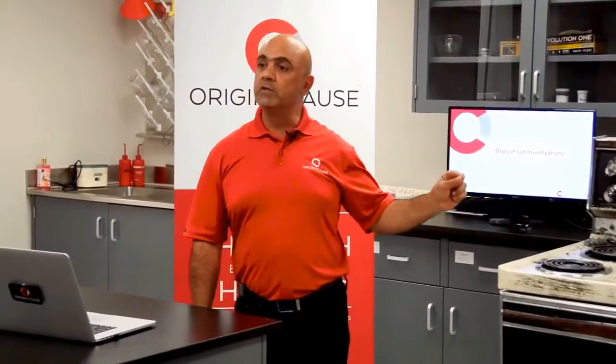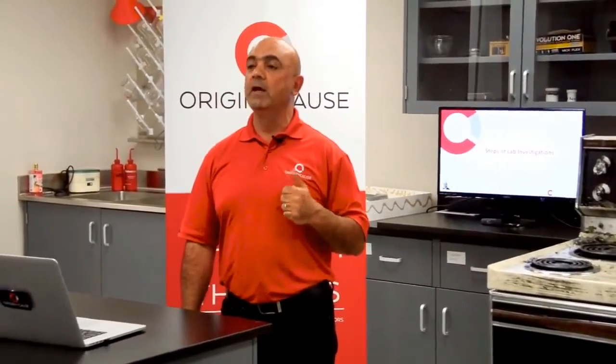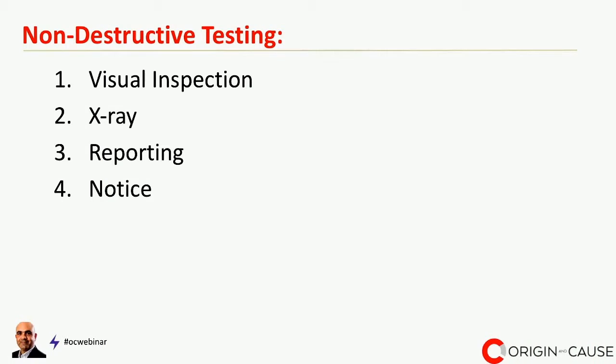Now that we've demonstrated the scene examination and determined it's important to bring this appliance into the lab, there are two ways we conduct our lab examination: first a non-destructive examination, followed at some point by a destructive examination. There are four different ways of conducting a non-destructive examination: a visual inspection, X-rays, reporting to our client, and providing notification to interested parties. The reason for a non-destructive examination is the concept of spoliation of evidence — we need to preserve the evidence so all interested parties have the opportunity to examine it.